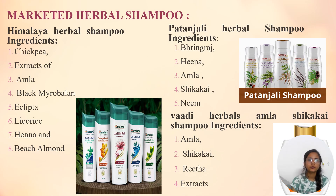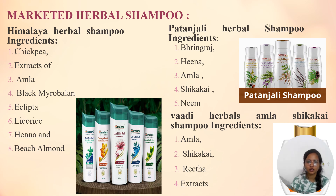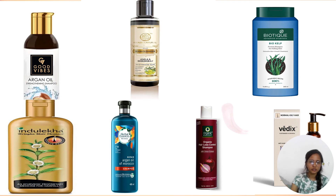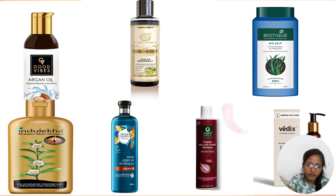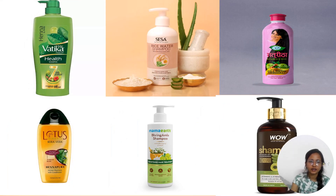Some examples of marketed herbal shampoos are: Himalaya, which includes Arche ka Pai extract, Amla, Bhringraj, Mayabala, Eclipta, licorice, henna, Triphala, and almond. Patanjali herbal shampoo ingredients include Bhringraj, henna, Amla, Shikakai, and Neem. Vadi herbal Amla Shikakai shampoo includes Amla, Shikakai, Reetha, and extracts. Some other brands for herbal shampoos are Good Vibes, Khadi Natural, Biotique, Vedix, Oprek herbal extracts, Induleva, Vartika, Sesa, Satrita, Pau Shampoo, Amar Shampoo, and Lotus.